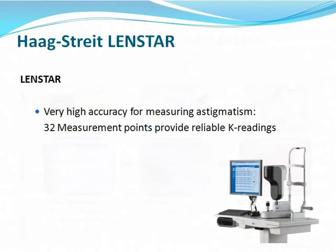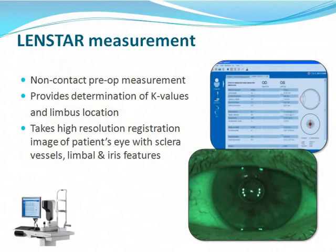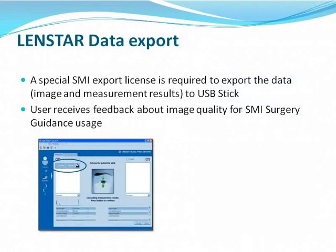The LENSTAR has very high accuracy for measurement of astigmatism because of the 32 measurement points available. It's a non-contact measurement that provides determination of K-values and limbus location. This high-resolution picture is combined with limbal vessel features and iris features. In the LENSTAR machine interface, there is a separate sheet where the SMI export button is indicated, and a license is required to export this data to a USB stick that is loaded into the surgery pilot.